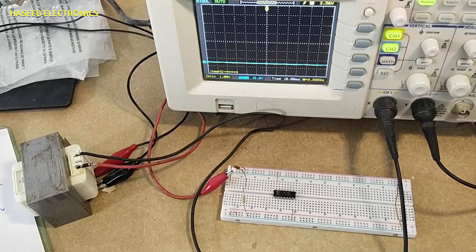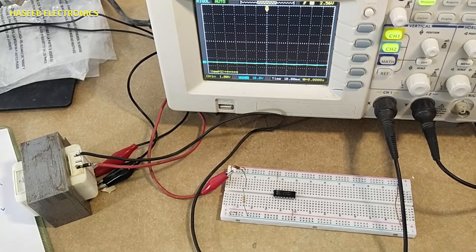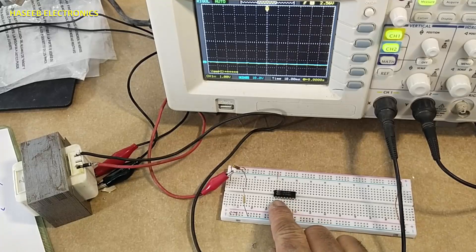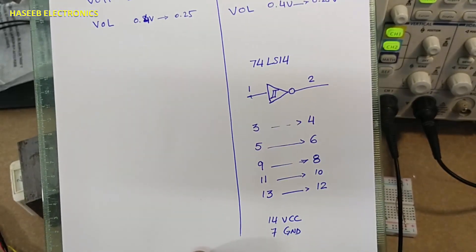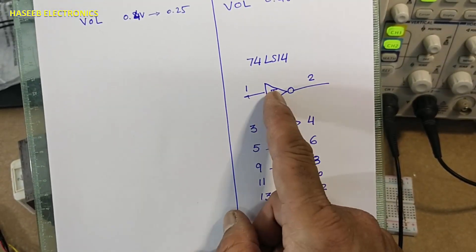Assalamu alaikum warahmatullahi wabarakatuhu, friends, welcome back to my channel. Today we will see the function of Schmidt trigger IC 74LS14 or 54LS14. There are six Schmidt inverters in this IC.